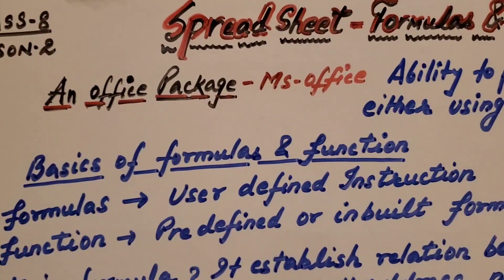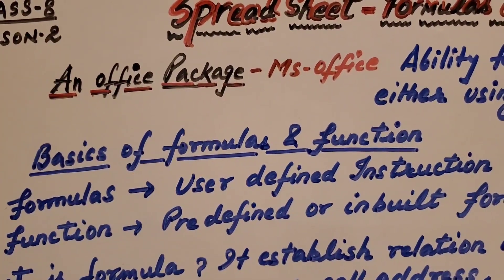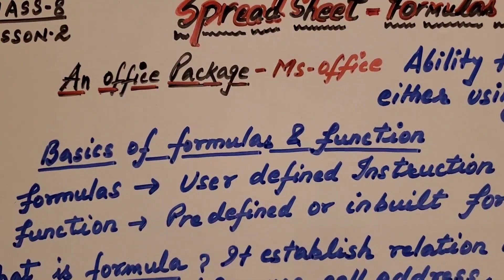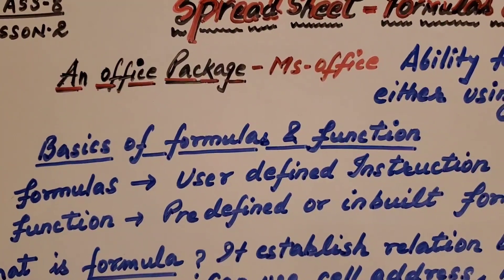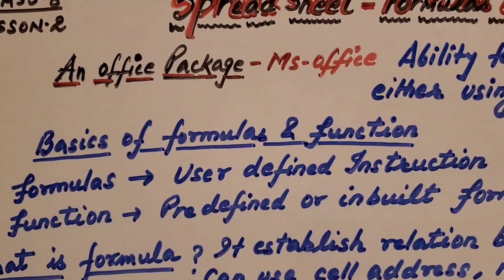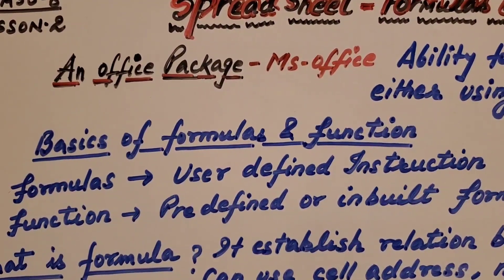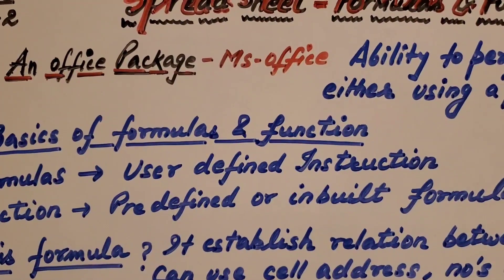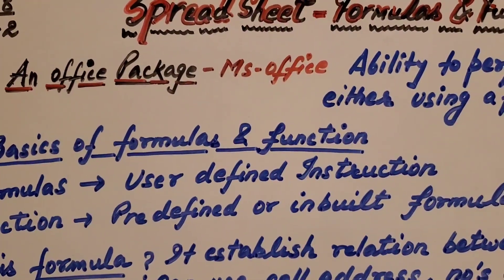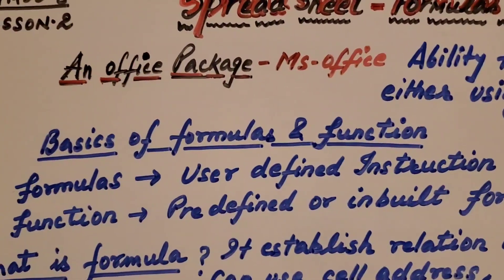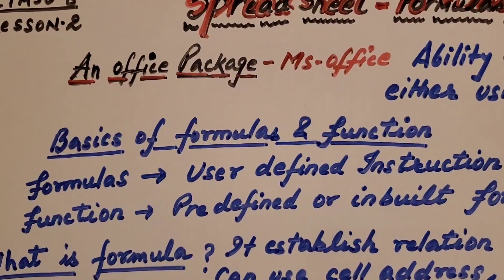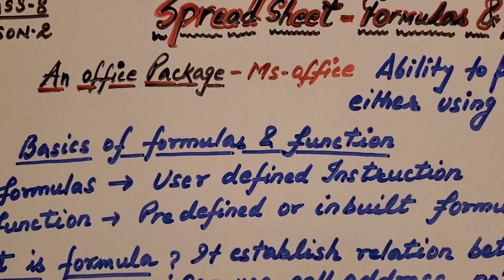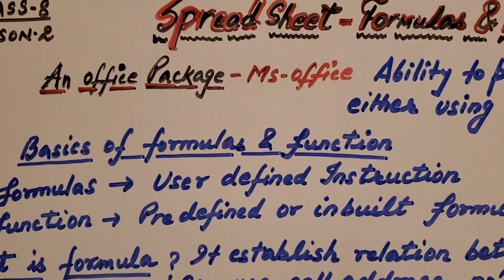Now, what is called formulas and functions? The first thing, formula and function, these are two different things. Formula, which we create and frame it. For example, A square minus B square is a formula, or PRT divided by 100 of simple interest is a formula. These formulas are user defined instructions, which has been made as per requirement. But the functions, they are never created by us. They are predefined. And we cannot make any kind of change in it.